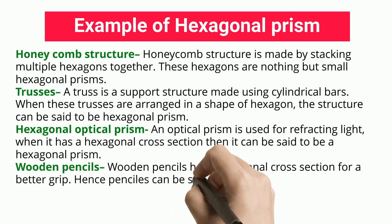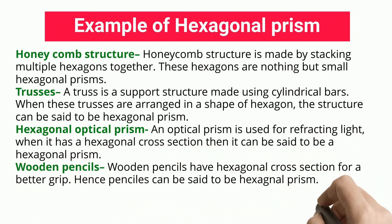Hexagonal optical prism: an optical prism is used for refracting light. When it has a hexagonal cross-section, it can be said to be a hexagonal prism. Wooden pencils: wooden pencils have a hexagonal cross-section for a better grip, and hence pencils can be said to be hexagonal prisms.